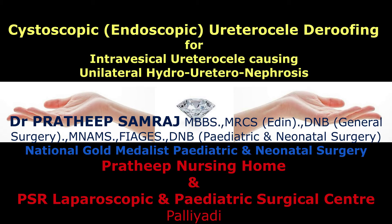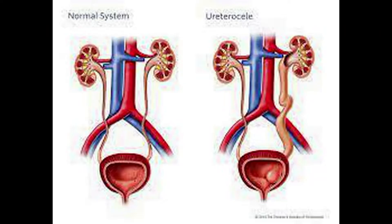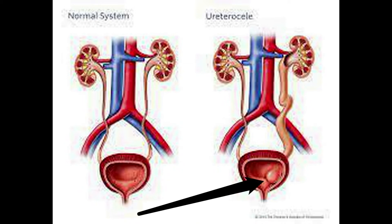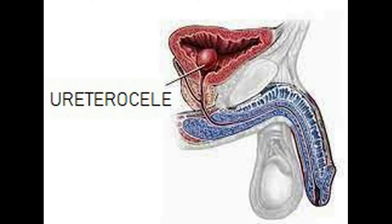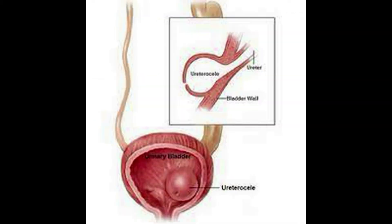The following procedure is cystoscopic de-roofing done for ureterocele of the bladder. Ureterocele is the condition in which there is ballooning of the end of the ureter, which is the tube draining from the kidney into the bladder, causing blockage in the flow of urine from the kidney into the bladder. This causes renal failure in the long run. The following procedure is done endoscopically to uncover or de-roof the ureterocele to remove the blockage so that urine flows into the bladder unobstructed from the kidney.